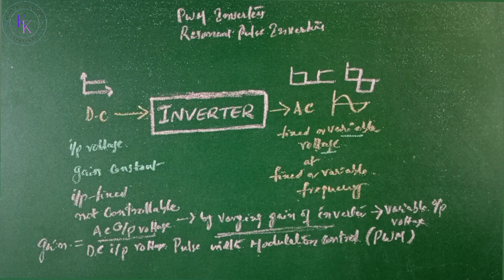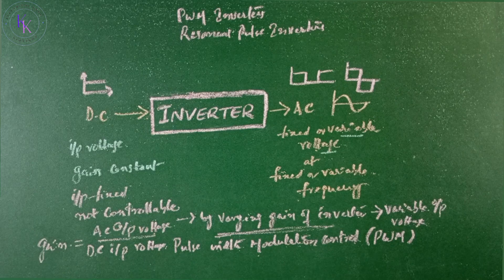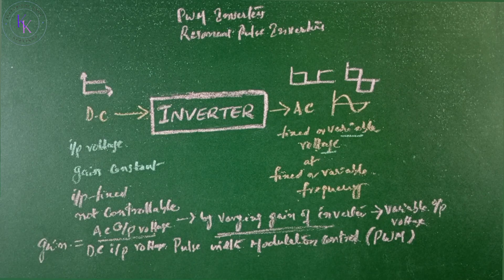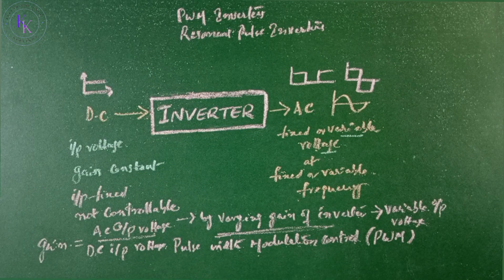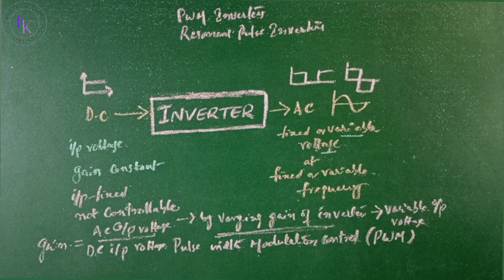These inverters are widely used in industrial applications, for example, variable speed AC motor drives, induction heating, standby power supplies, and uninterruptible power supplies, famously known as UPS.